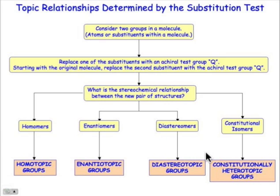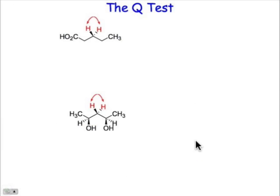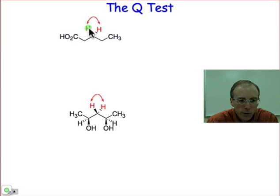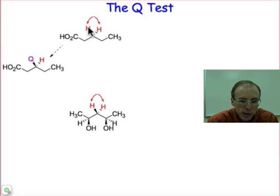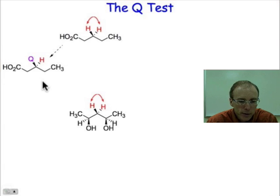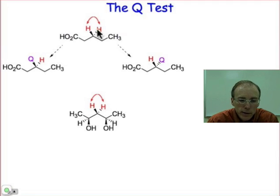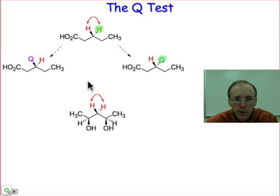Let's apply this classification scheme to some of the molecules from the previous webcast. We had asked how the hydrogen atoms in pentanoic acid are related to one another. Applying the Q test, we start with our original molecule, replace one of those hydrogens — say the one in front — with a Q, and draw that structure on the left. Then, starting with the original molecule, we replace the hydrogen atom in the back with a Q, generating a new pair of isomers.